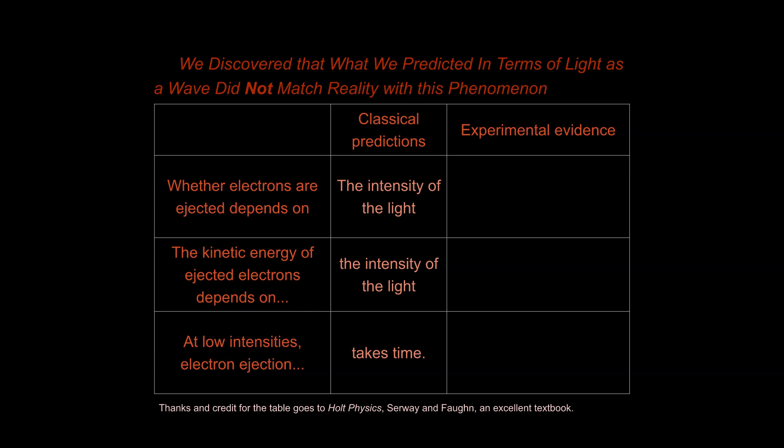What does that mean? Well, the brighter the light is, the faster the ejected electrons would go. That would be a reasonable expectation if we continued to think about light as simply a wave. Lastly, our prediction was is that at low intensities, electron ejection would just take some time. It would just take longer to knock those off. But if you're thinking about light as a giant wave, as just a wave of energy, it would be enough to knock off electrons.